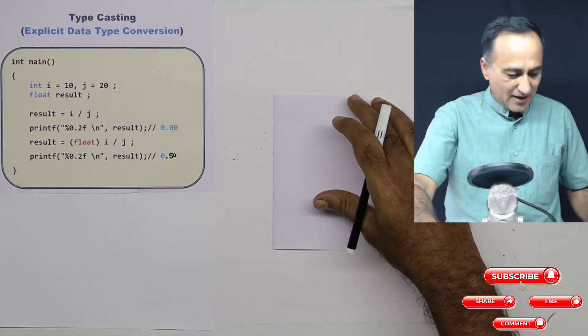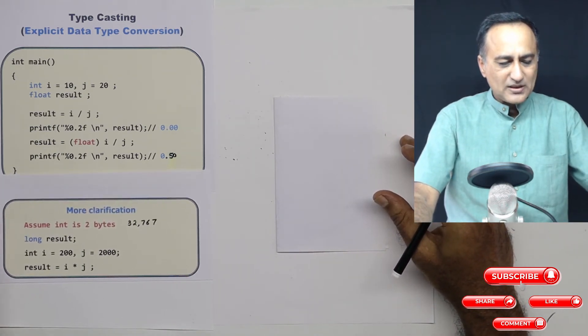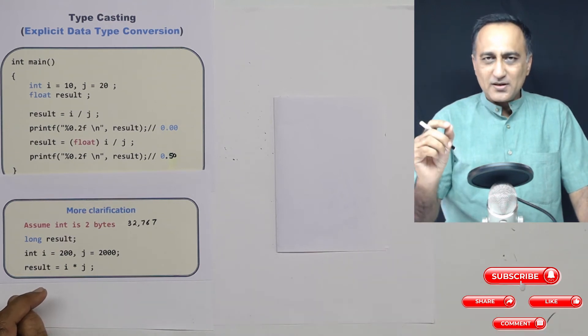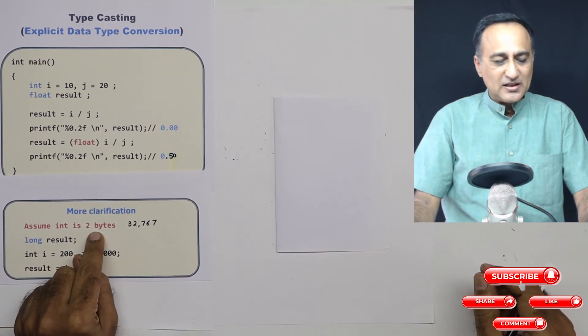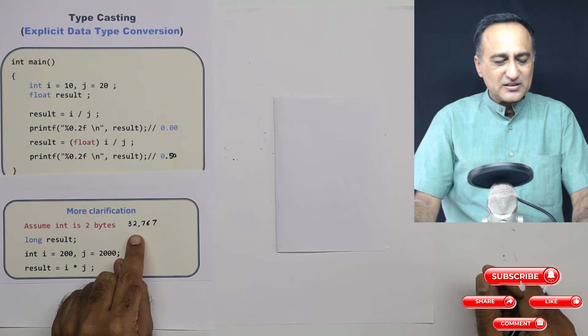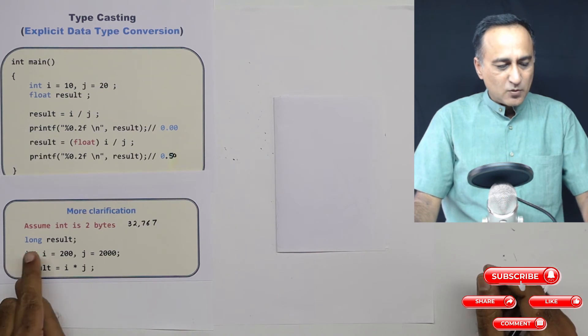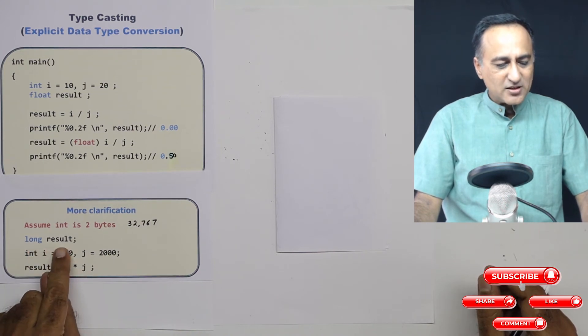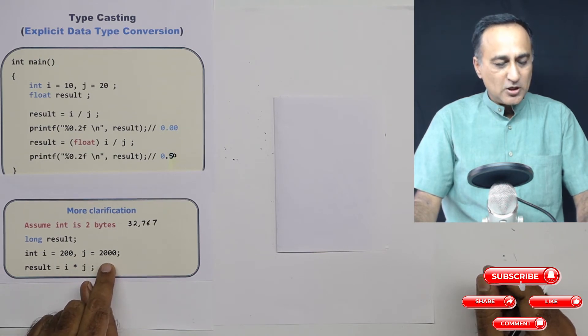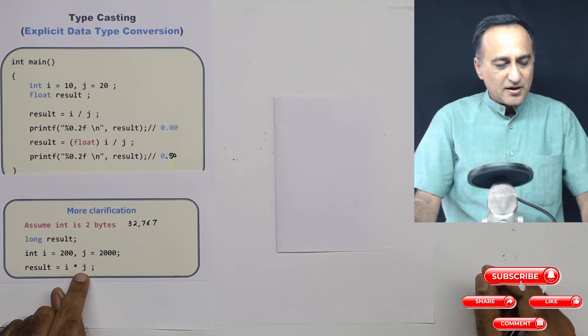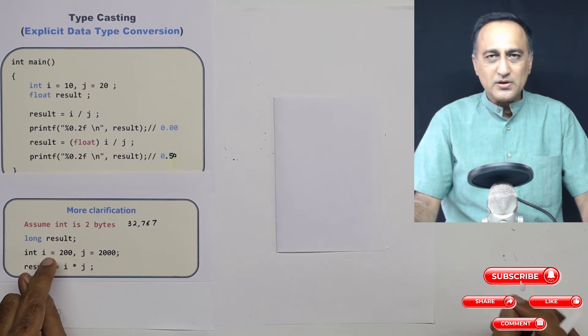Now, let's try to have a little more understanding of this particular problem. Assume I'm working on a machine where the size of an int happens to be just two bytes. Since it's a signed int, the maximum capacity is 32,767. I'm declaring a variable called long result, I have int i equal to 200, j equal to 2000. Now if I multiply i by j, it will come around four lakh, which result being a long type of variable should be able to easily store it.